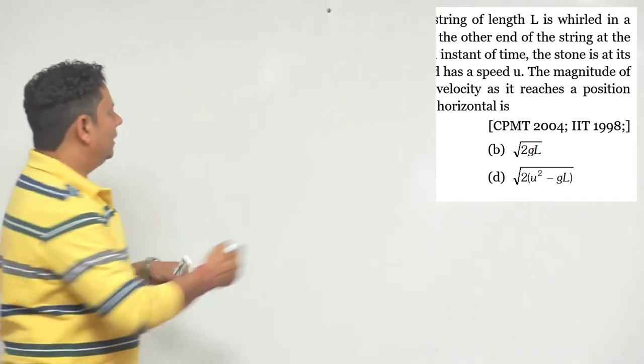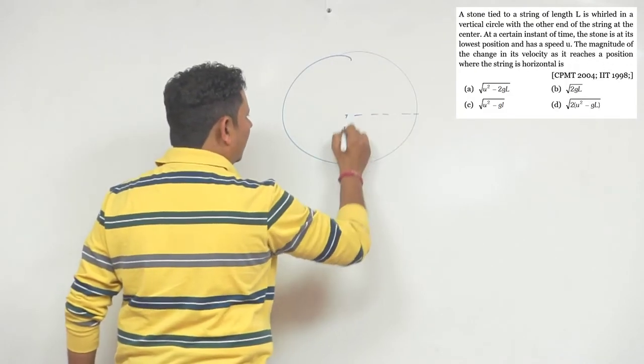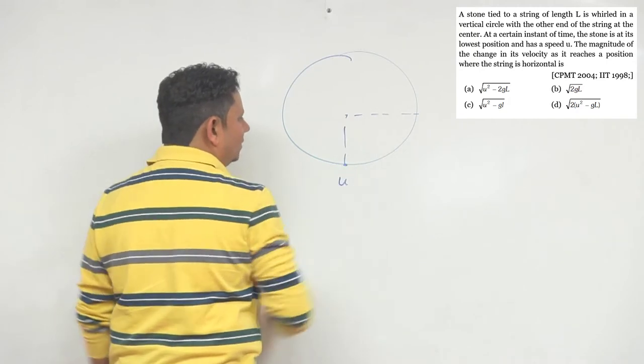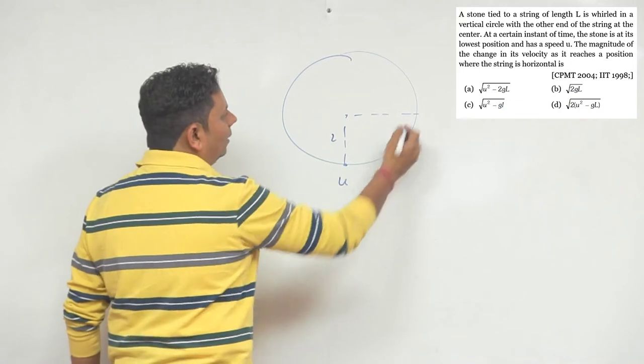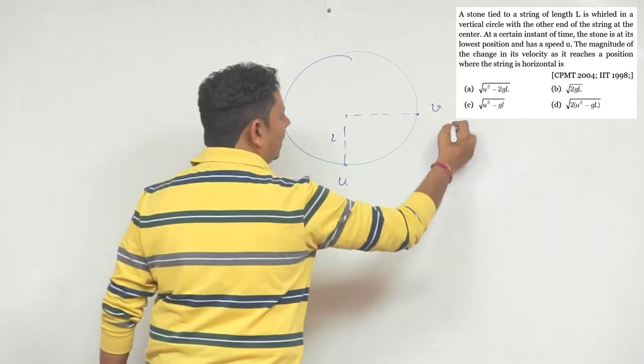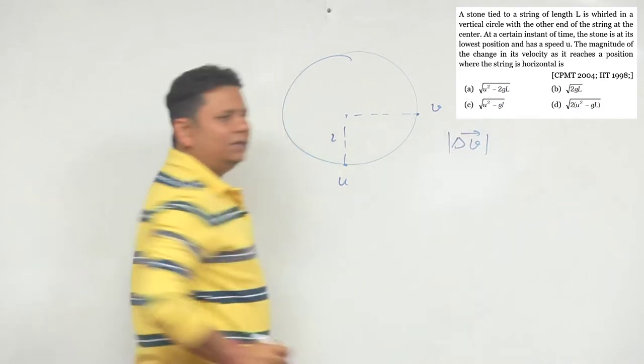We have to tell you here that a particle is doing circular motion. In this location, the velocity is U and the length L is given. And when the particle is here, we have to tell you what is delta V, the magnitude of the change in velocity.